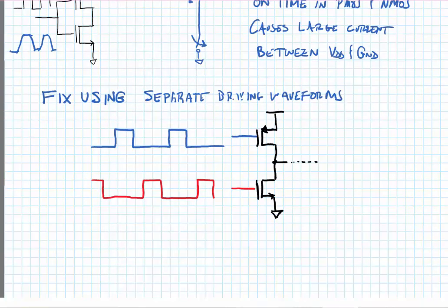In principle, the way that we fix the crowbar current is to use separate driving waveforms for the PMOS and the NMOS transistor such that there is a period of no overlap between the waveform. This period of no overlap is sometimes called the dead time where neither transistor is on. It's important to try and minimize the width of the dead time as well because if we have too high a dead time, it means that neither switch is on and that the output duty cycle will be too small and we would lose the output power a bit.